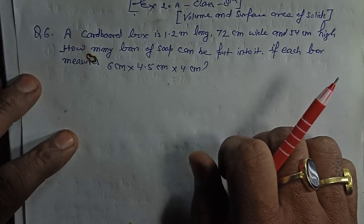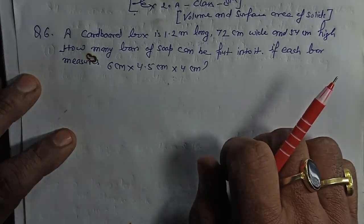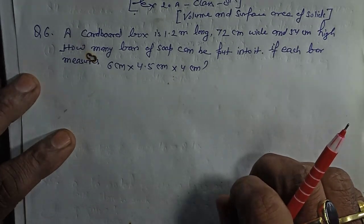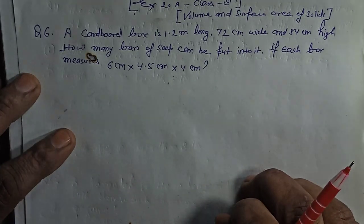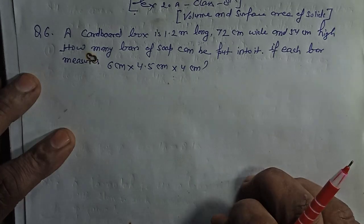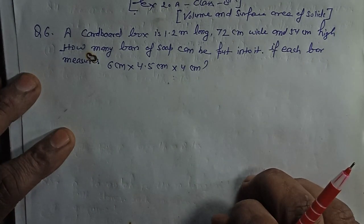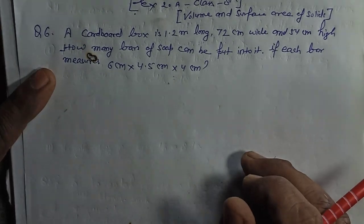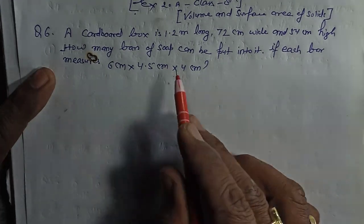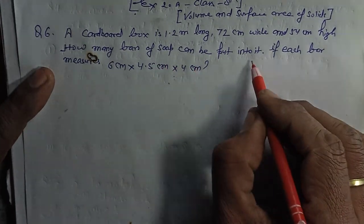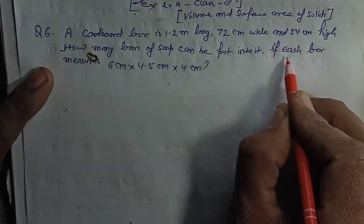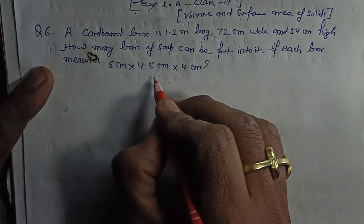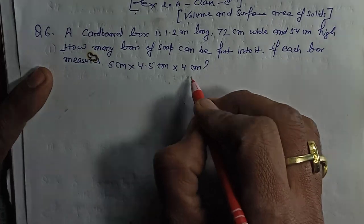Class 7 Earth, exercise 20A, question number 6 and 7 I will discuss in this series. Question 6 says: a cardboard box is 1.2 meter long, 72 centimeter wide and 54 centimeter high. How many bars of soap can be put in it, if each bar measures 6 centimeter, 4.5 centimeter and 4 centimeter?